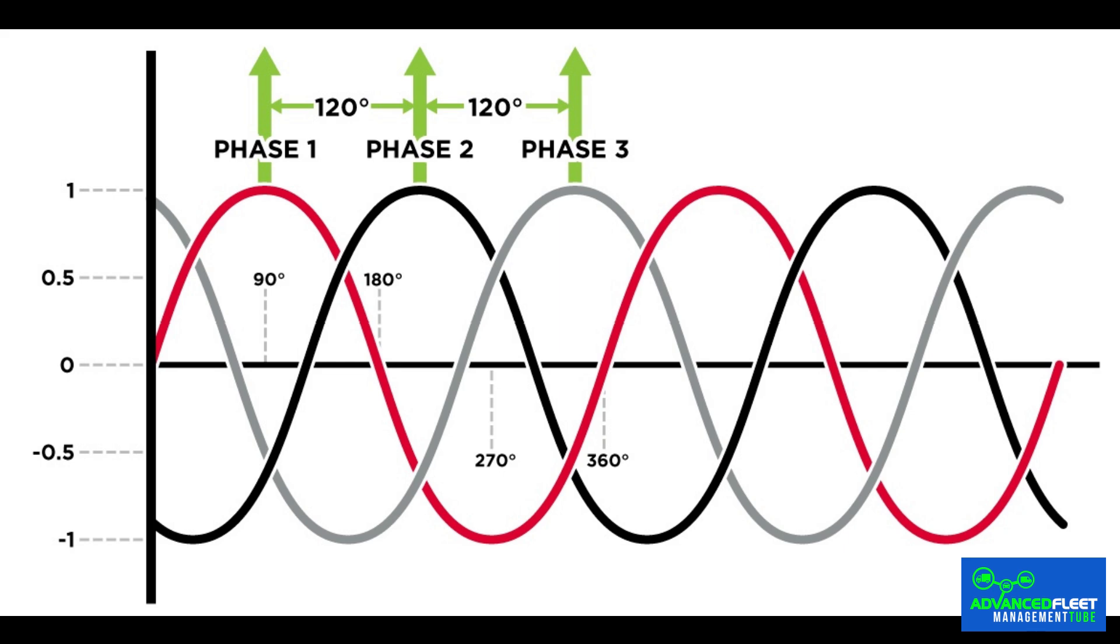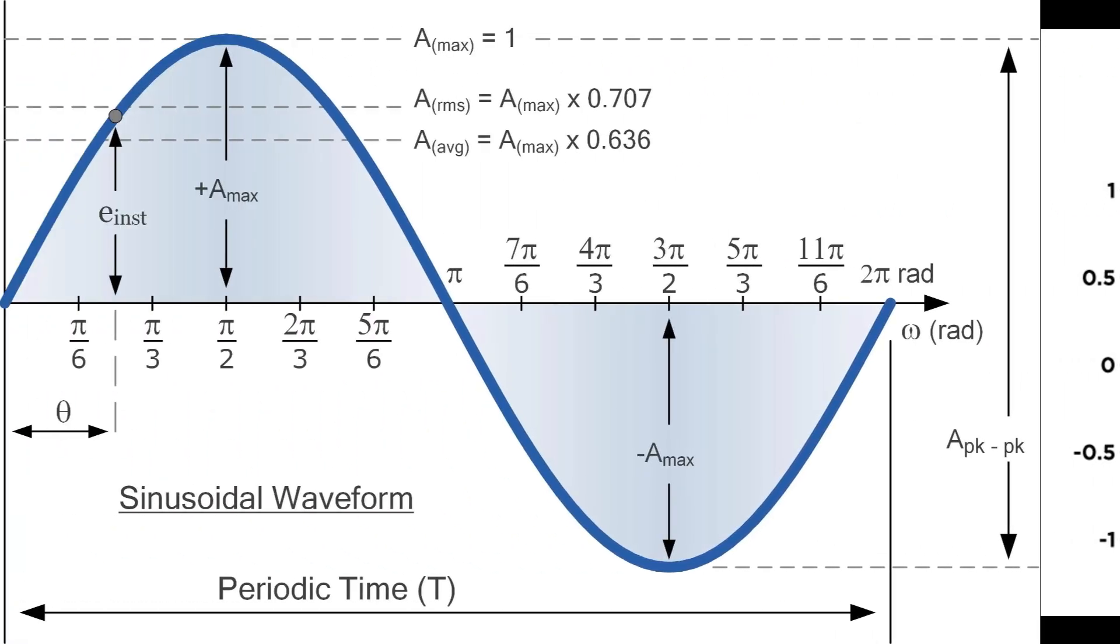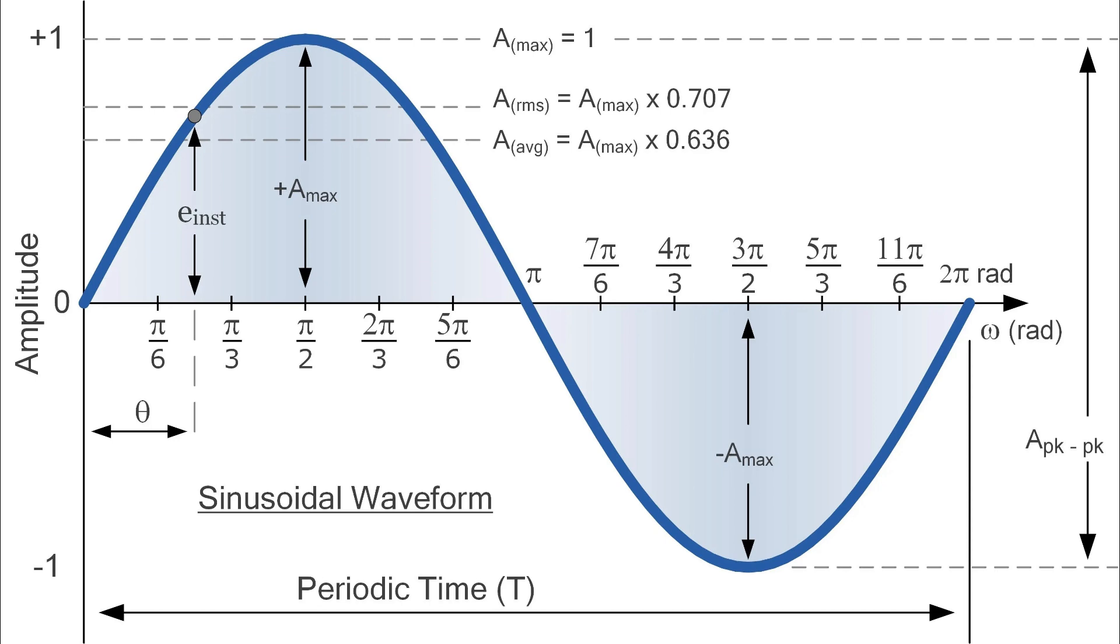Therefore, the inverter in our vehicles does not produce one alternating current output but three. The alternating current generated by the inverter cannot be just any type of signal. It must have a sinusoidal waveform as this allows for efficient, safe and stable transmission.